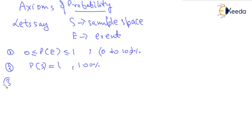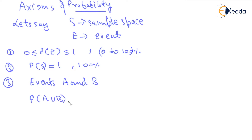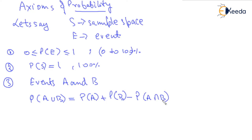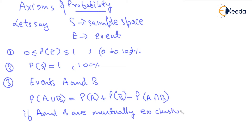Third: let's say we have events A and B for an experiment. Then, the Probability of A union B can be given as Probability of A plus Probability of B minus Probability of A intersection B. We'll add the probability of A and B and then subtract the A intersection B. And what if A and B are mutually exclusive? If they are mutually exclusive, this A intersection B will become 0.